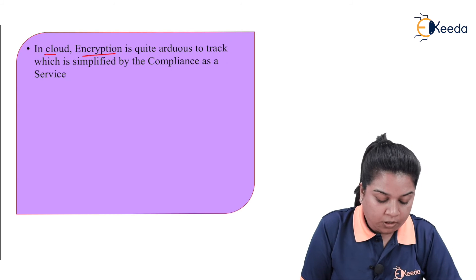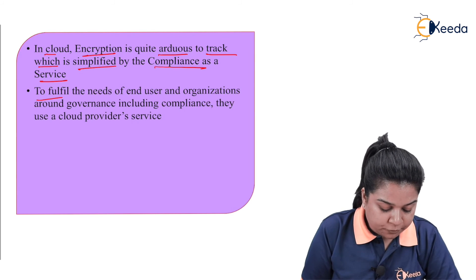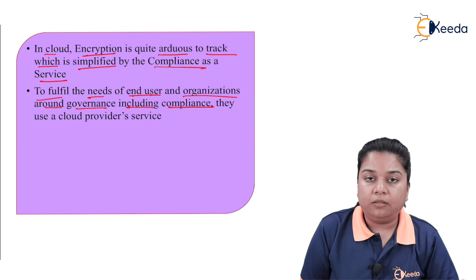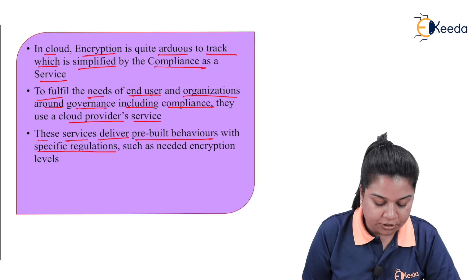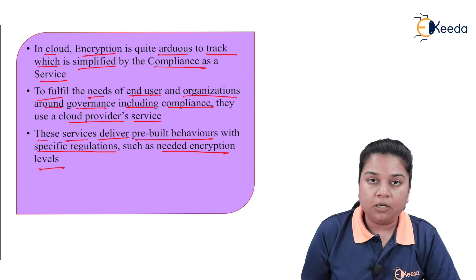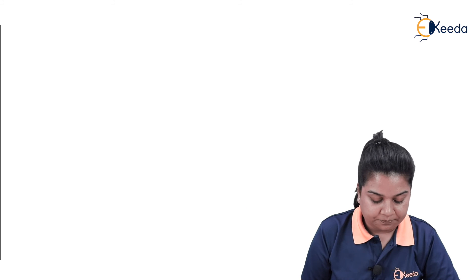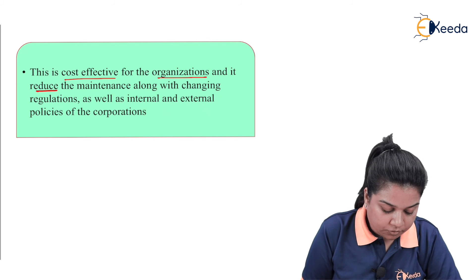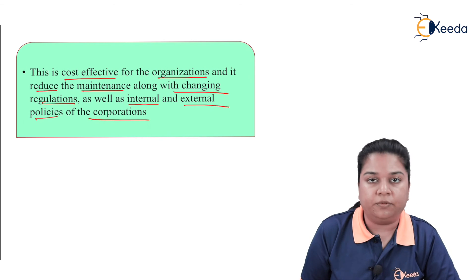In cloud, encryption is quite arduous to track, which is simplified by compliance as a service. To fulfill the needs of end-users and organizations around governance including compliance, they use cloud provider services. These services deliver pre-built behaviors with specific regulations such as needed encryption levels. Compliance as a service is configurable — no development is required. This is cost-effective for organizations and it reduces maintenance along with changing regulations as well as internal and external policies of the corporations.